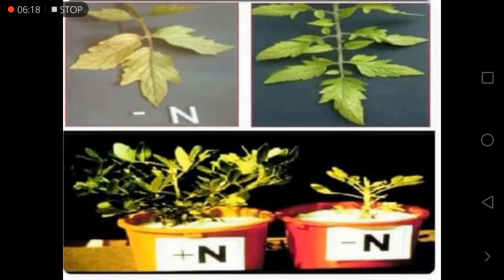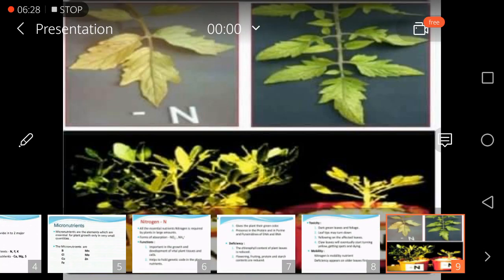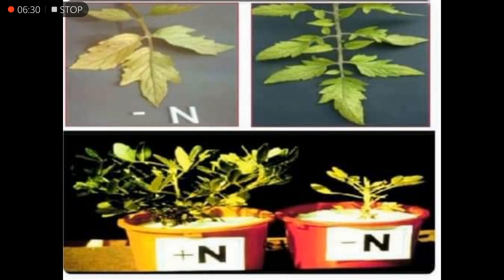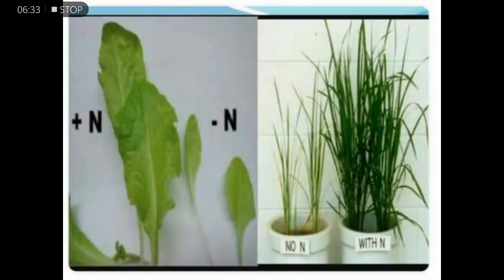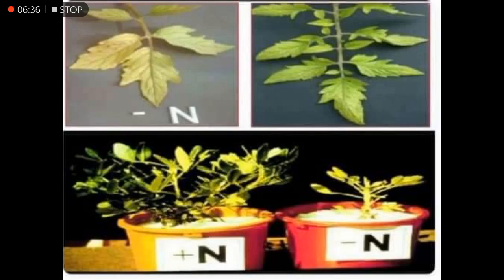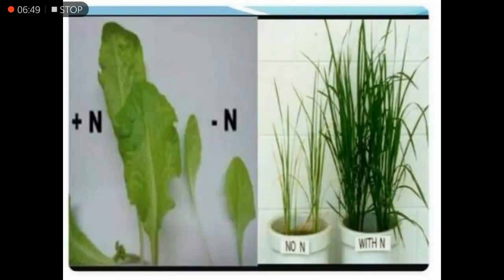Here I will show you some pictures comparing plants with nitrogen versus plants without nitrogen. The first picture shows a plant with no nitrogen alongside one with nitrogen. With sufficient nitrogen, plants are able to grow and develop beautifully, with large leaves. Without nitrogen, growth is stunted and plants have reduced leaf size and development.